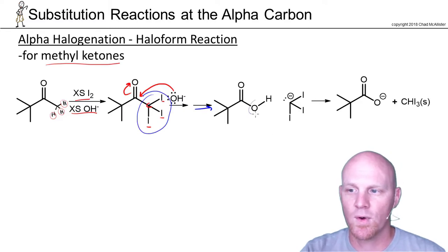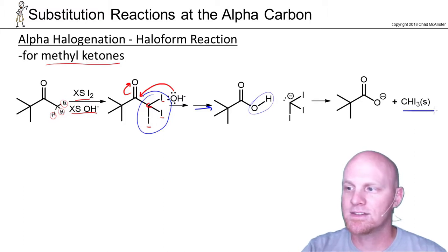There's your leaving group right there, and then this thing's simply just going to get protonated and turn into CH3I, and that's a yellow solid right there that precipitates out of the solution, leaving you with a carboxylate here.